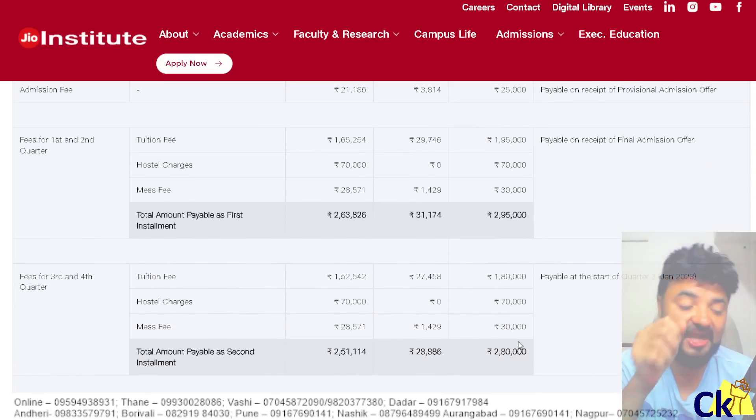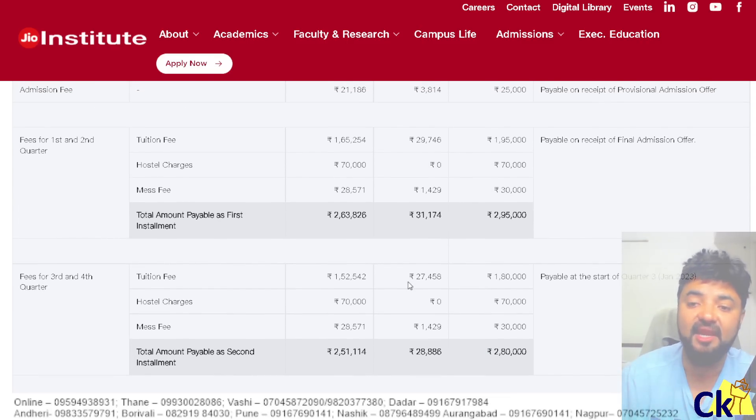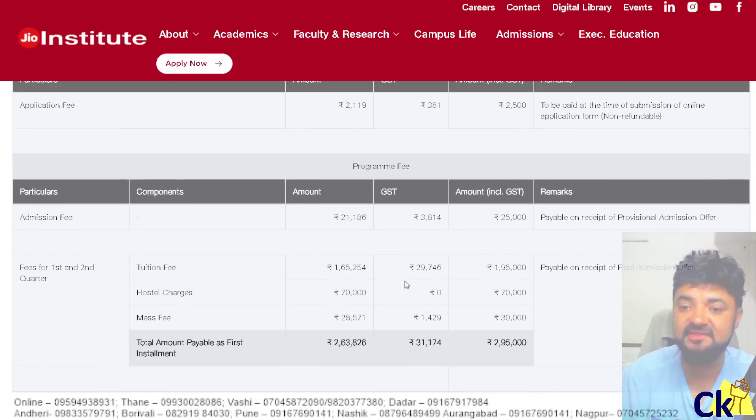Mujhe yeh cheez pe doubt tha ki shayad because Reliance hai toh might be charging 30-40 lakh ka fees at international level, but nahi, 6 lakh ki fees including hostel charges and mess fees. Khana peena nahi hai, sorry peena tumhari upar hai. Khana aur rehna, sab jod ke 6 lakh ki fees hai. And agar aapko 15 lakh ka bhi average package de ta hai, I think that's one of the best ROI you can expect.